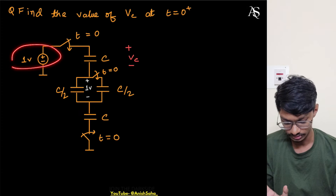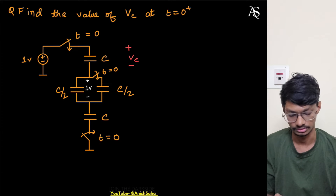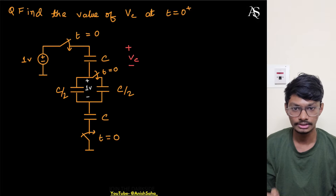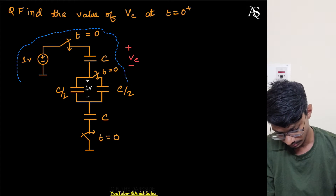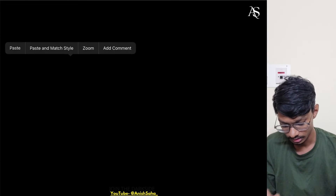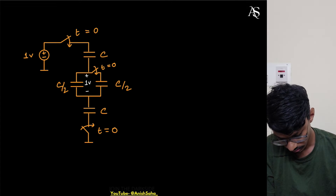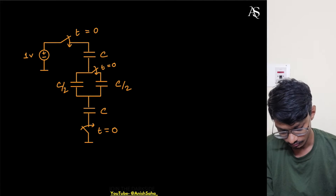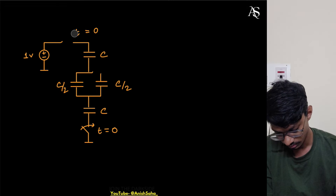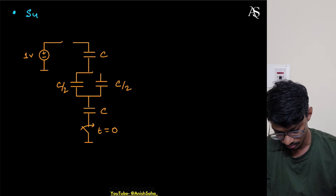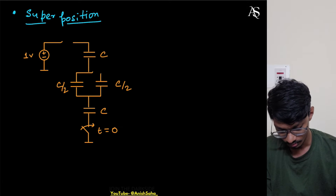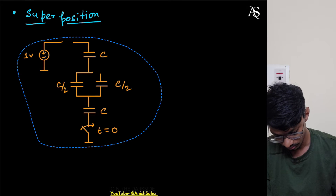Whenever these types of questions come on switched capacitors with a voltage source, always use superposition. How will you use superposition? First, let me take the circuit and consider one source at a time. Case one is only considering the one volt voltage source.